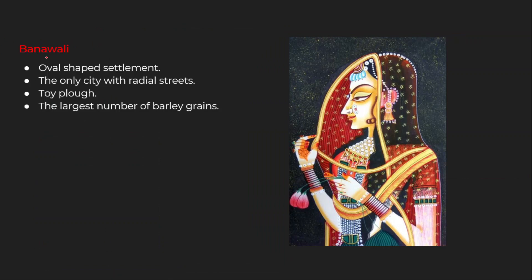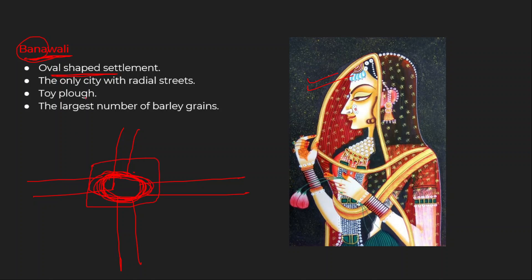Banwali. Think of 'Bani Thani' paintings from Rajasthan — a very decorated, beautiful Rajasthani girl fond of wearing bangles and a ghaghra. She was very clever and lived in an oval-shaped settlement. She took a room right in the center, where there were four roads — a crossroads. The settlement where she lived was oval in shape and located in the middle of the crossroads.